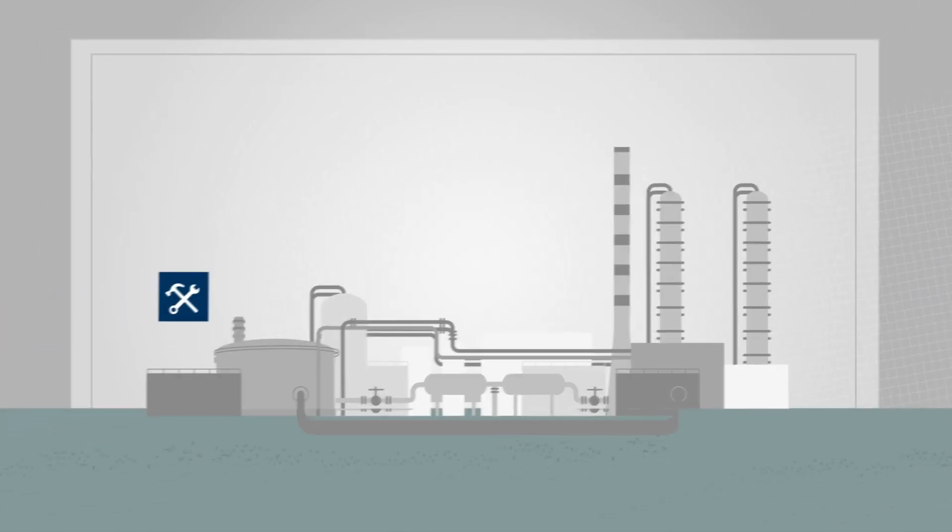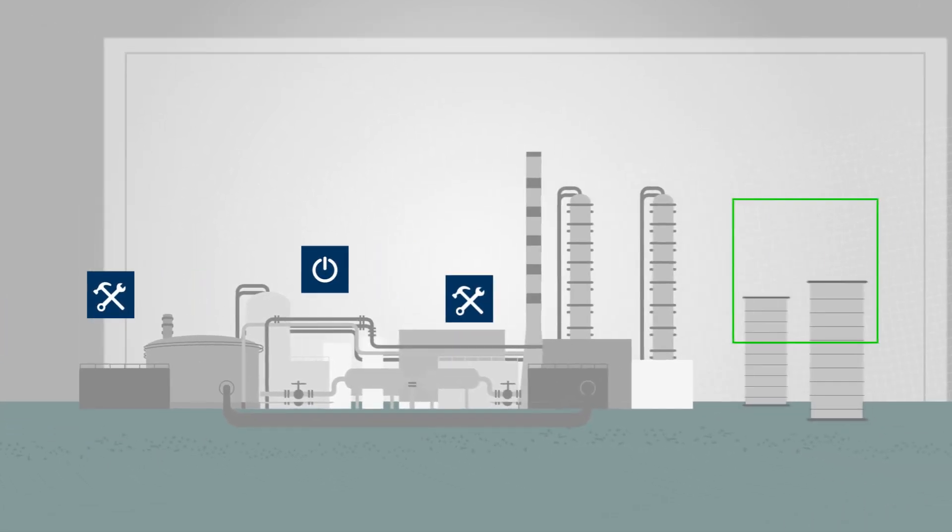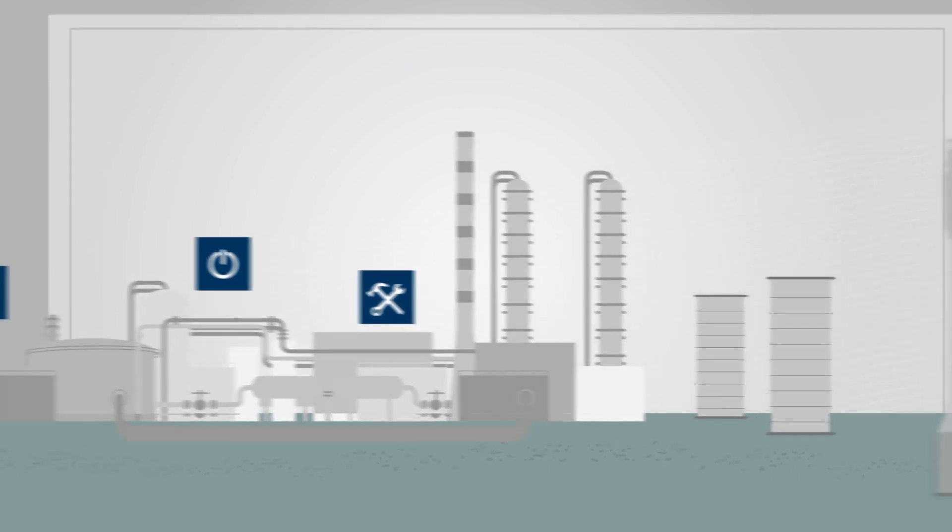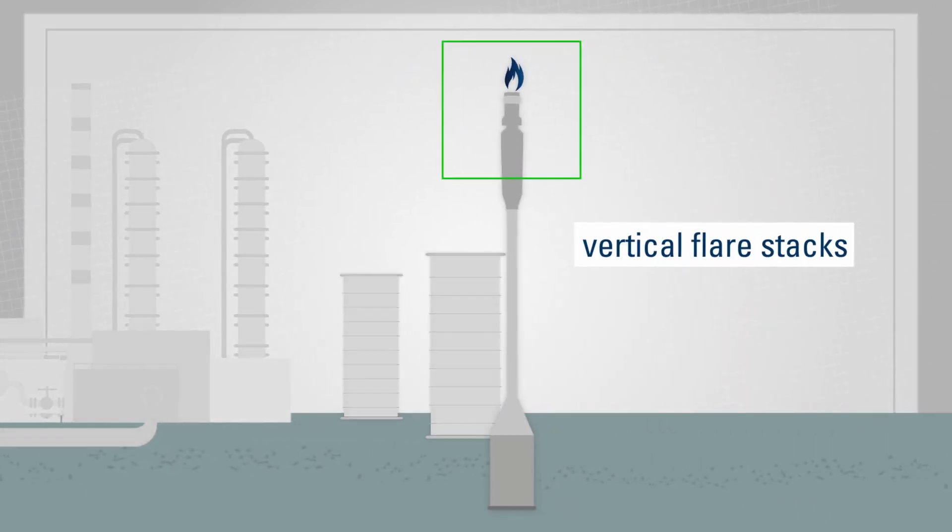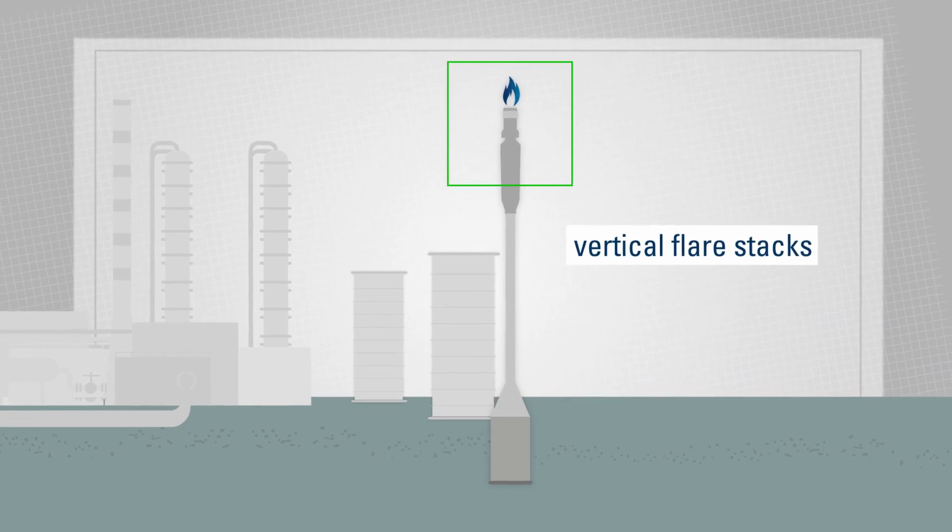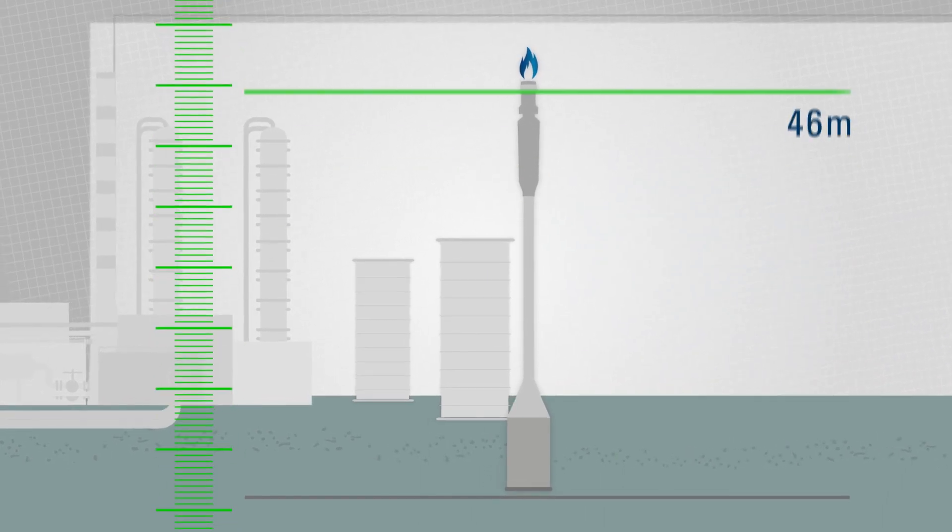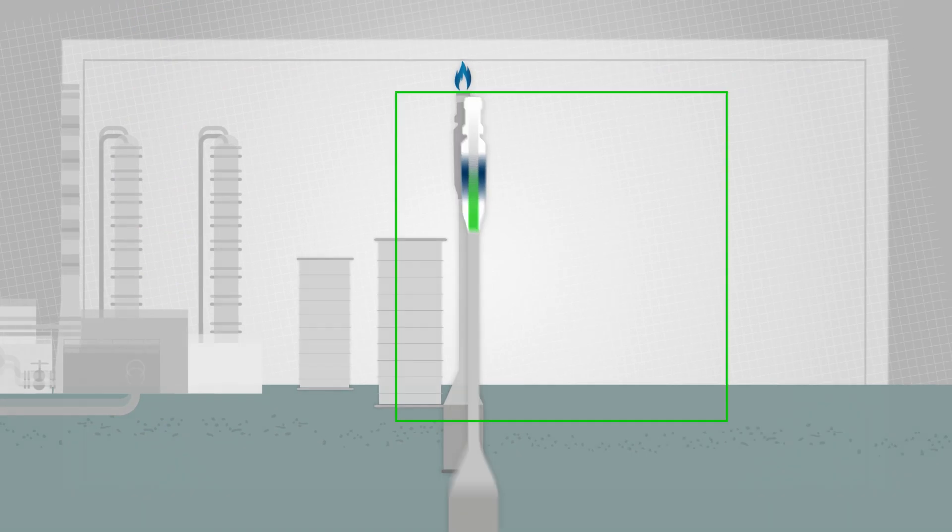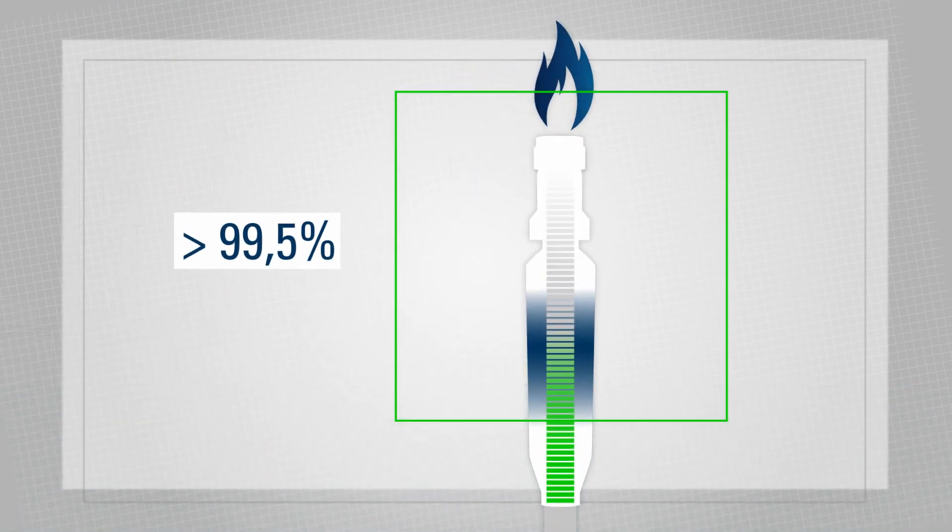But there are rare cases when the ground-level flares cannot handle the input. This is when the vertical flare stacks are activated automatically. As these flare stacks burn off the gas at high temperatures and heights exceeding 60 meters, in essence, the gas disappears without a trace.